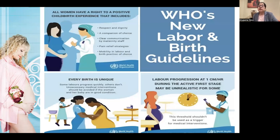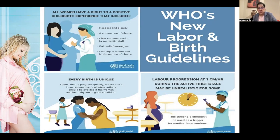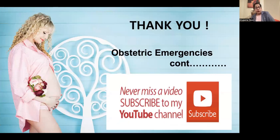To recapitulate: in the labor care guide, all women have a right to a positive childbirth experience — including respect and dignity, companion of choice, clear communication by maternity staff, pain relief strategies, mobility in labor, and birth position of choice. Every birth is unique; some labors progress quickly, others do not. Unnecessary medical interventions need to be avoided. Labor progression at one centimeter per hour during the active stage may be unrealistic for some, and this threshold should not be used as a trigger for medical interventions. These are the basis of the new labor care guidelines.